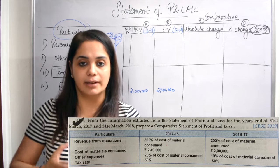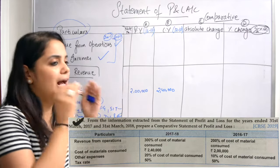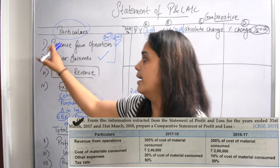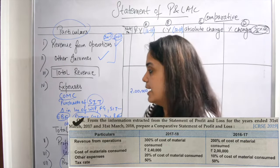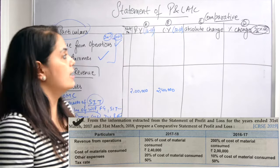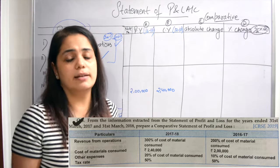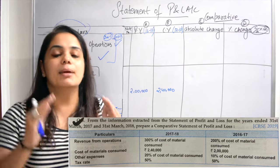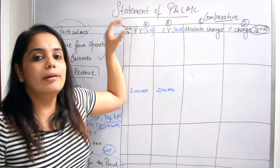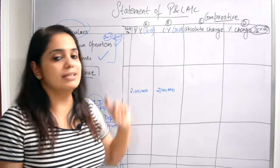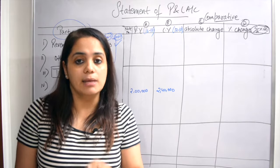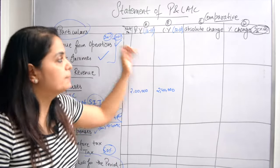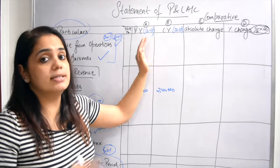First, you can make the whole format in rough work quickly — make the whole format of the profit and loss account quickly. Make note of everything that is given. The next thing to remember is that after the note number, you will write the previous year figure first, then the current year figure. You will not get any marks if you reverse this order, so just remember: previous year first, then current year.